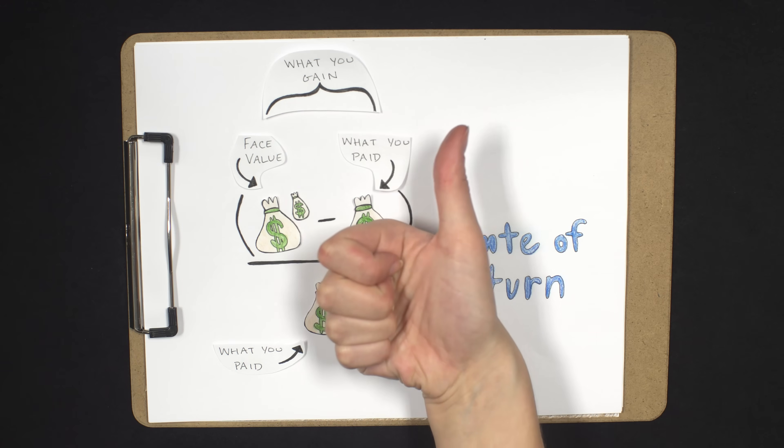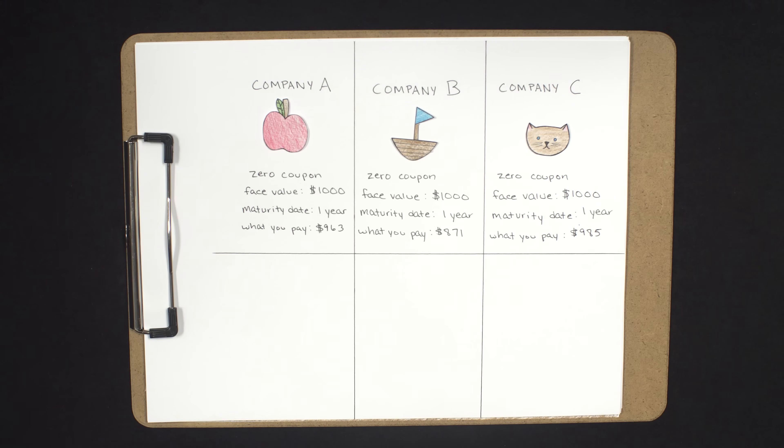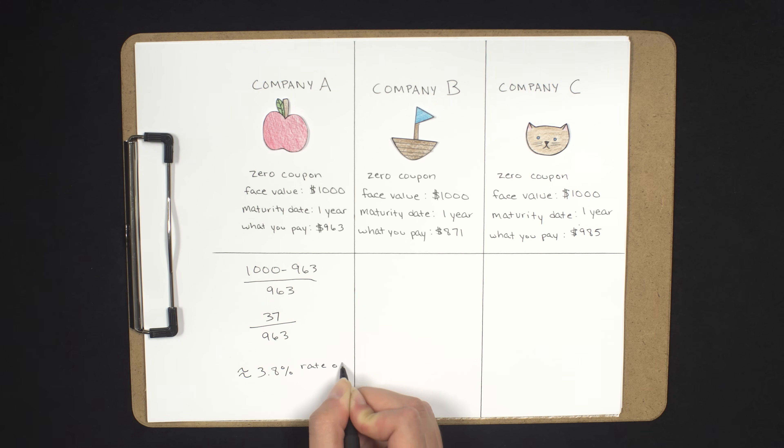So now that we've deciphered all that jargon, let's plug our first company into this equation. Company A's bond rate of return. What will you gain? $1,000, or the face value, minus $963, your initial investment, equals a gain of $37. Divide that gain by $963, what you initially paid for the bond, which equals a 3.8% rate of return.